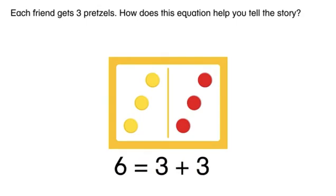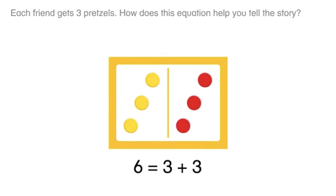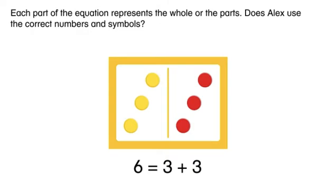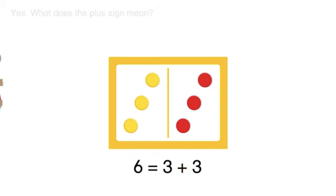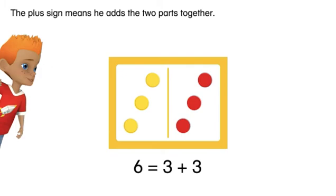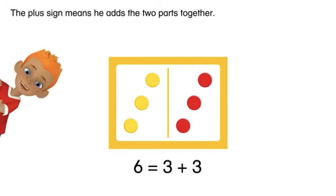How does this equation help you tell the story? Each part of the equation represents the whole or the parts. Does Alex use the correct numbers and symbols? Yes. What does the plus sign mean? The plus sign means he adds the two parts together.